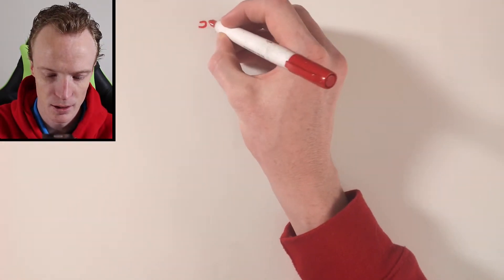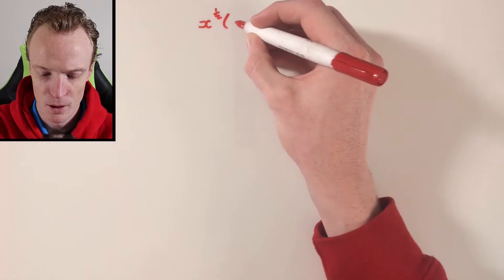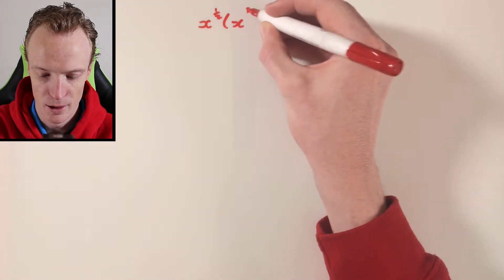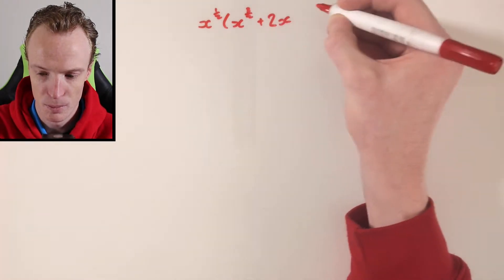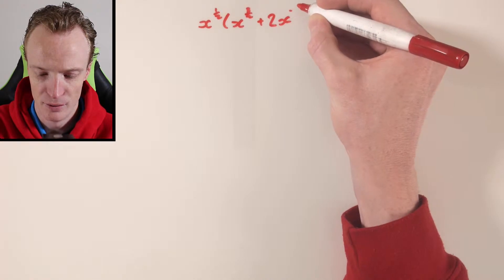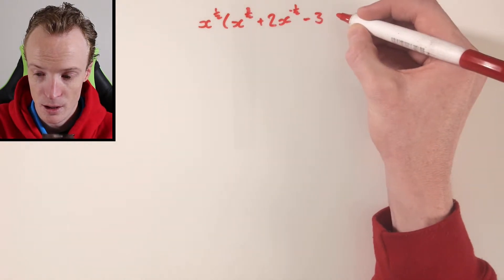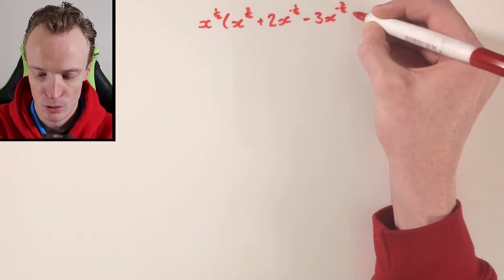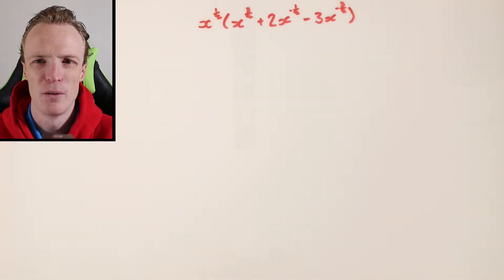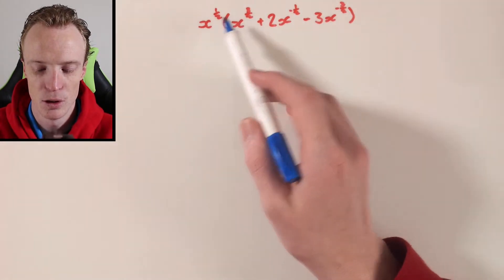Let's begin with a problem. Let's say I wanted to expand x to the power of a half, and that was being multiplied with x to the power of 3 over 2, plus 2x to the power of negative a half, and then we subtracted 3x to the power of negative 3 over 2. To do this, what I've got here is the distributive law, where I've got a term out the front that needs to multiply with every single term inside my brackets.